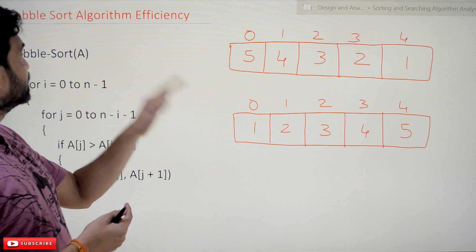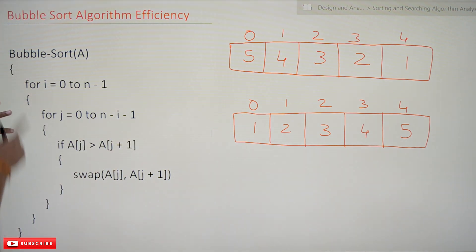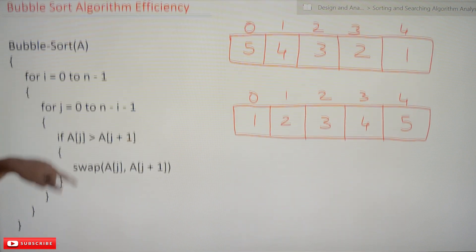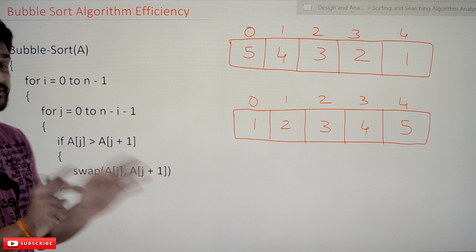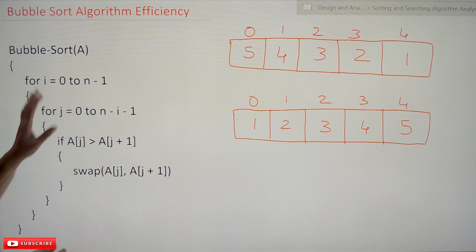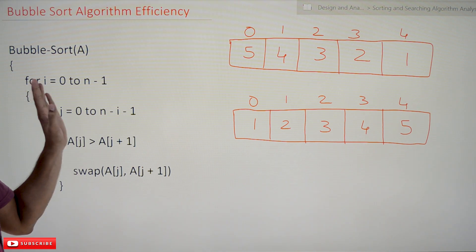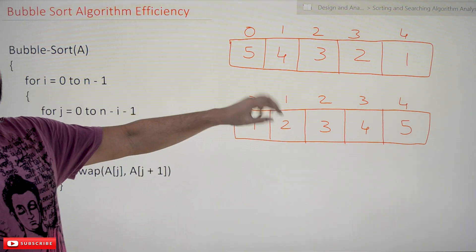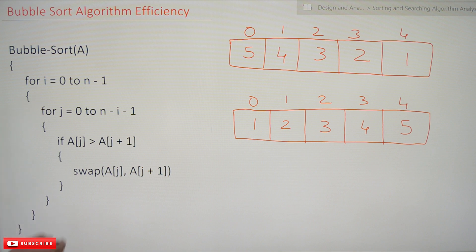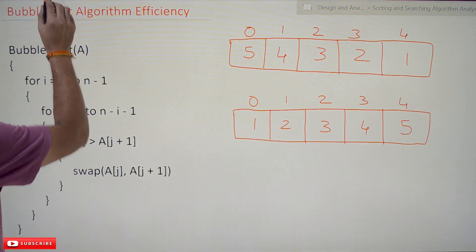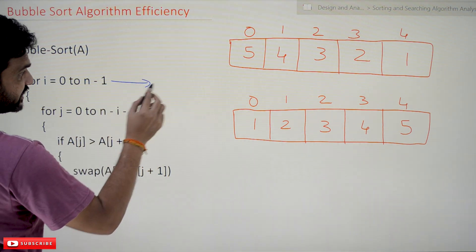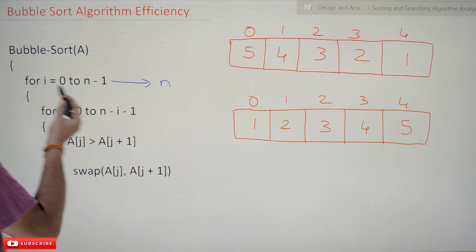We'll try to understand the efficiency of both algorithms. We have the original bubble sort algorithm here, and this is the optimized bubble sort algorithm, and we'll try to analyze both and find their efficiency. For this analysis we are going to take the worst case and the best case scenarios. Now coming to the original algorithm of bubble sort, this outer loop is going to iterate n number of times.